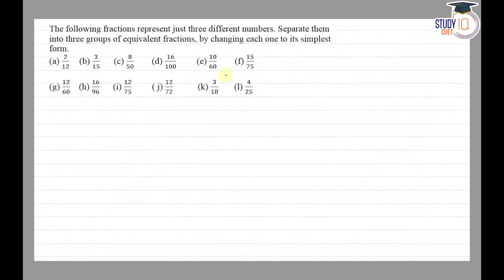Hello everyone. This question appears in Class 6 NCERT chapter on fractions. This is the sixth question of Exercise 7.4. The question says: the following fractions represent just three different numbers — separate them into three groups of equivalent fractions by changing each one to its simplest form. So first we have to convert each fraction to its simplest form.